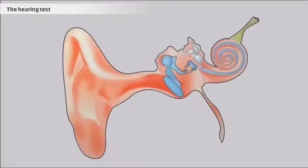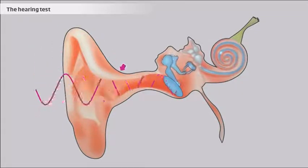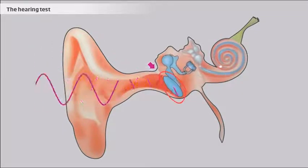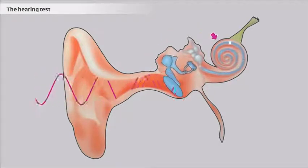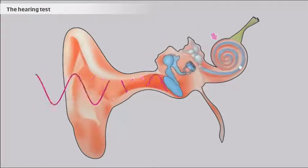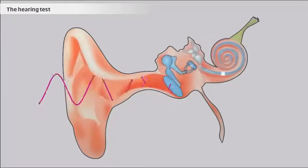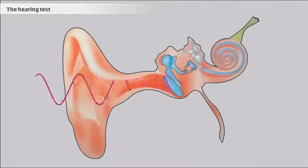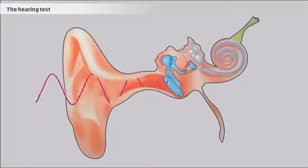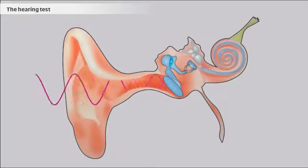When a headset is used for the test, the sound must travel from the outer ear through the ear canal via the eardrum to the middle ear and into the inner ear. However, there may be an obstruction in the middle ear which prevents sound waves from reaching the inner ear.